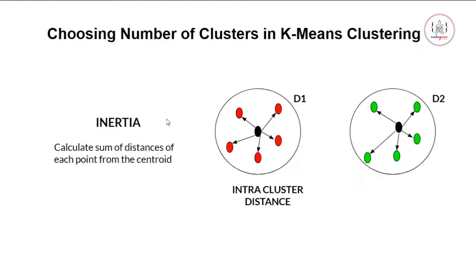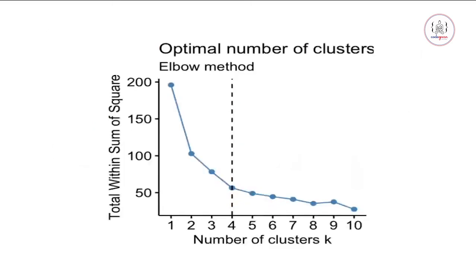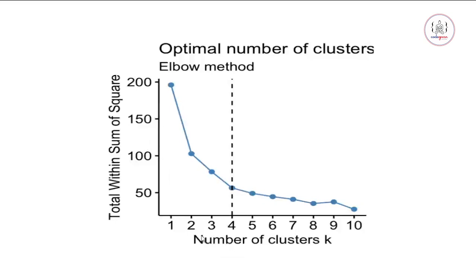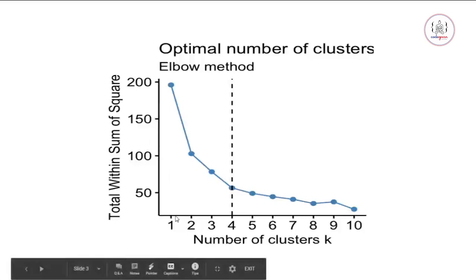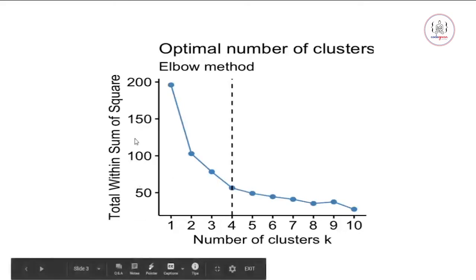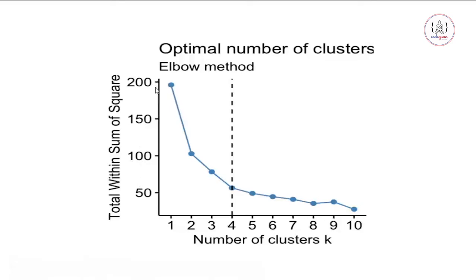We have called this inertia. Some people call this within sum of squares also, or WSS. Here what we do is we plot this inertia on the y-axis and on the x-axis we have the number of clusters. So here at k equals 1, which means all the data points are in one cluster, at that point we have this total within sum of squares of 200. This is our inertia.